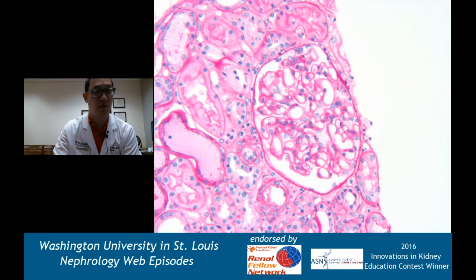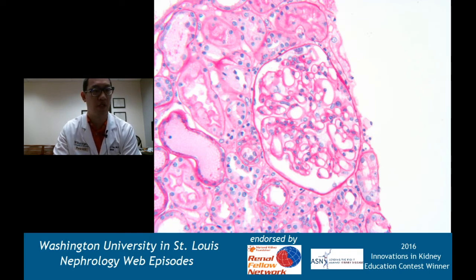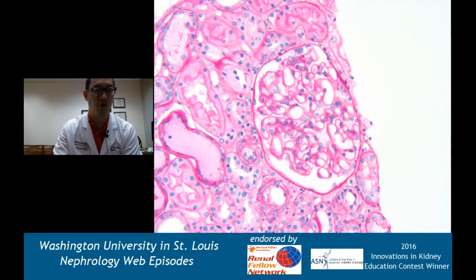Not all glomeruli showed that. Here's another glomerulus from the exact same kidney biopsy, also a PAS stain. You can see the Bowman's capsule and the tubular epithelium light up nicely with the PAS. This glomerulus looks pretty normal - open loops, healthy mesangium, no crescents, no fibrinoid necrosis. So what we have is focal areas of crescents.